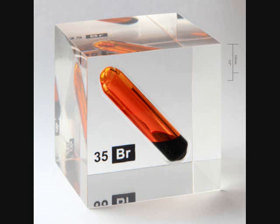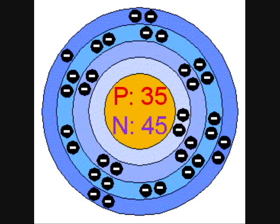Bromine is the 35th element on the periodic table. It has 35 protons and 45 neutrons.